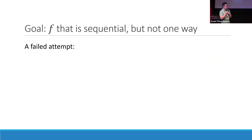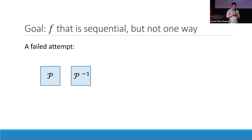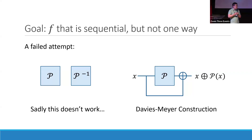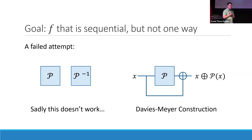Our goal is to find a function that is sequential but not one-way. A very natural attempt is to take a one-way permutation and modify it to be non-one-way. Consider the function that computes X XOR with a one-way permutation of X — this is known as the Davis-Meyer construction for block ciphers. It essentially says that even if you know how to invert the one-way permutation P, you still cannot effectively invert this function. But this is not good for us, because in order to get non-one-wayness, we need to give the adversary more power than just inverting the oracle itself.